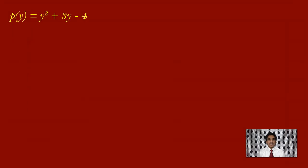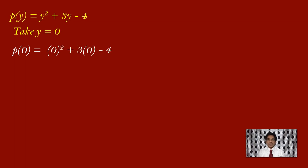Let us take one more example. Here, I have taken p of y is equal to y square plus 3y minus 4. This is a polynomial in y. Now, I would like to find p of 0. So wherever there is y, you have to substitute that with 0. Applying that, we get 0 square plus 3 into 0 minus 4. 0 square is 0, 3 zeros are 0, so first two terms give 0 plus 0, minus 4. 0 minus 4 is minus 4.